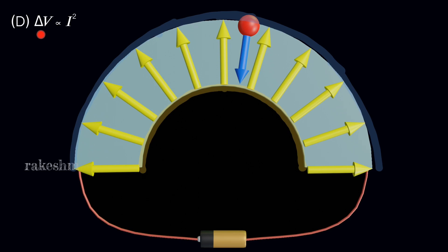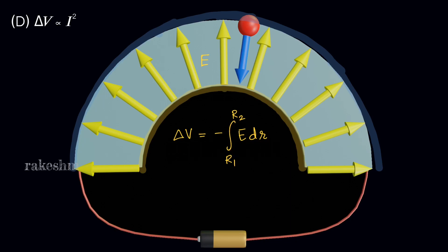Let us move to the last option D, which states delta V is proportional to I squared. We need to find the potential difference between the inner and outer surfaces. If E is the electric field inside this strip directed radially outward, then delta V equals minus the integral of E·dr from R1 to R2. We need to find the electric field E.